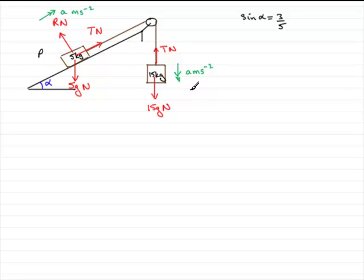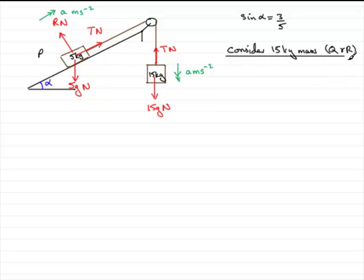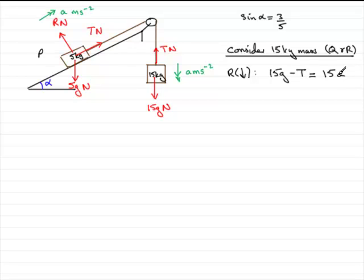We need to find the acceleration and the tension. In questions like this, we consider each particle separately. Starting with the 15 kilogram mass — that's essentially Q and R — we resolve in the direction of motion, which is downwards. Resolving downwards, the resultant force is 15g minus T, and that equals mass times acceleration: 15a. We have two unknowns, T and a, so we can't solve this yet. We'll put it on hold and call it equation 1. We need another equation.